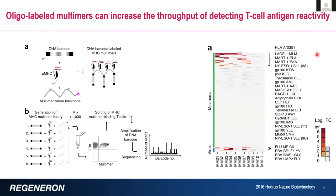Hadrup and colleagues used a number of these individual epitopes to profile responses in melanoma patients. Each column here is the antigen specificities present in the peripheral blood for a unique melanoma patient. The darker the red, the higher the read detected from the individual antigens. You see what you would expect from profiling individual epitopes — a lot of viral reactivity, some flu and EBV responses, but also responses specific to antigens expressed on melanoma cells such as MART1, NYESO, and MAGE. In one sample, able to profile 50 or 60 different antigens for each individual patient.